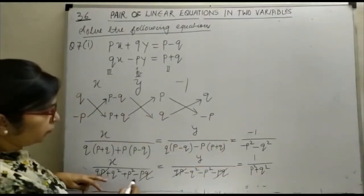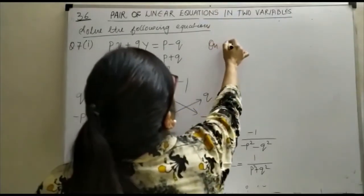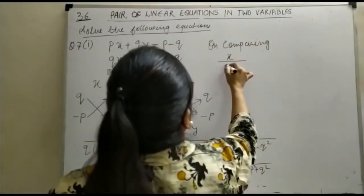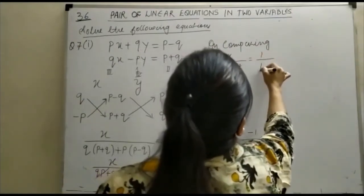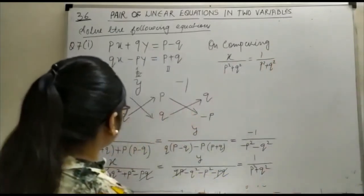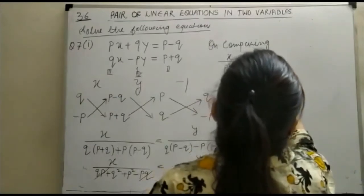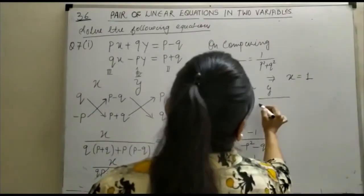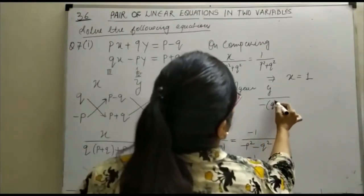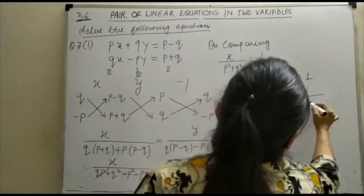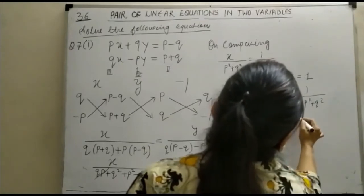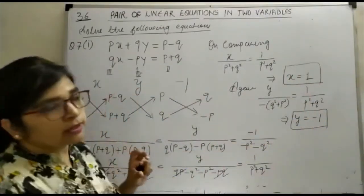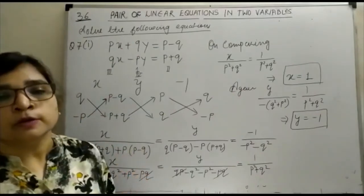So for finding the value of x and y you have to compare. On comparing, x upon P squared plus Q squared is equal to 1 upon P squared plus Q squared — these two terms cancel, implying x is equal to 1. Similarly, y is equal to minus 1. This is how we obtain the value of the variable when the linear equation in two variables is given with literal constants rather than numerical values.